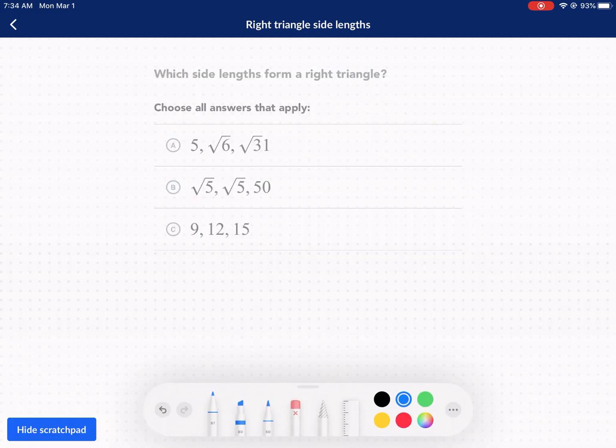Next question. We have here 9, 12, 15. So it's 81 plus 144. Does that equal 225? I don't believe so. If we divide each one of these by three, let's see if it has a similar scale, but three, four. Yes, it does.